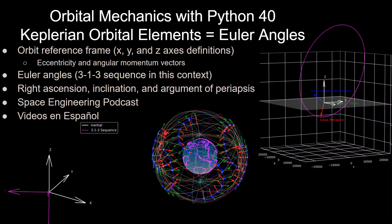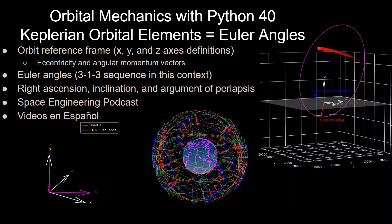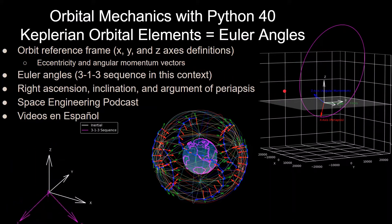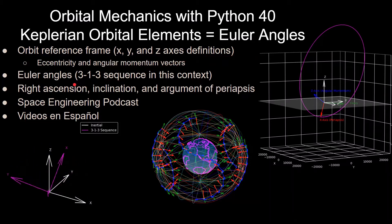This is the 40th video in the series. In this one, we'll be going through the orbit reference frame — how to define the x, y, and z axes of an orbit, as seen in the plot on the right, which includes the eccentricity and angular momentum vectors — what Euler angles are, what a 3-1-3 sequence means in the context of Keplerian orbital elements, and then the details of right ascension, inclination, and argument of periapsis definitions.